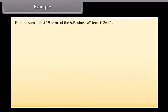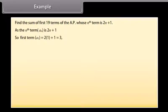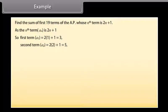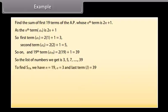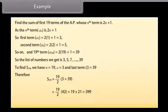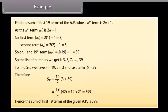Find the sum of the first 19 terms of the AP whose nth term is 2n + 1. Since a(n) = 2n + 1, the first term a1 = 2(1) + 1 = 3, second term a2 = 2(2) + 1 = 5, and the 19th term = 2(19) + 1 = 39. So the list of numbers is 3, 5, 7, ..., 39. To find S19, with n = 19, a = 3, and l = 39: S19 = (19/2) × (3 + 39) = (19/2) × 42 = 19 × 21 = 399. Hence the sum of first 19 terms is 399.